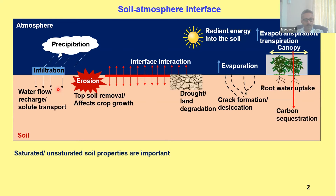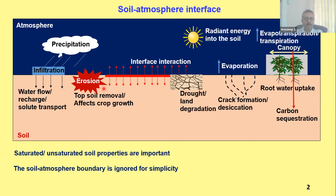Saturated and unsaturated soil properties become very important in these contexts. The soil atmosphere boundary is ignored for simplicity because most problems — be it slope stability — we don't consider the soil atmosphere boundary and its temporal variation, as it is mainly associated with the complexity of solving the problem. But these days it has become very important that we include this temporally variable soil atmosphere boundary. What is that soil atmosphere boundary? It is basically what happens in the atmosphere and how it feeds to the soil — for example, a combination of rainfall, evaporation, and evapotranspiration happening over a spell of maybe 10 to 20 years, and how this is going to impact the soil and its stability.